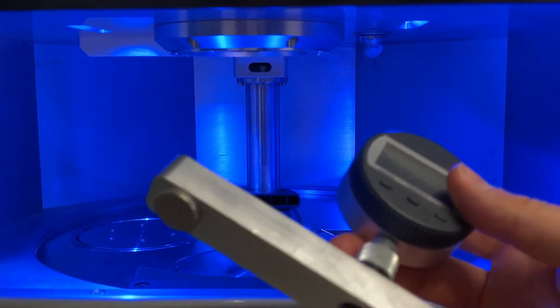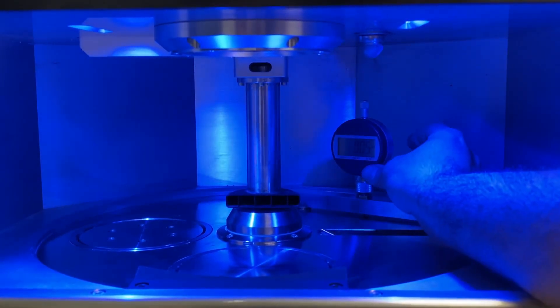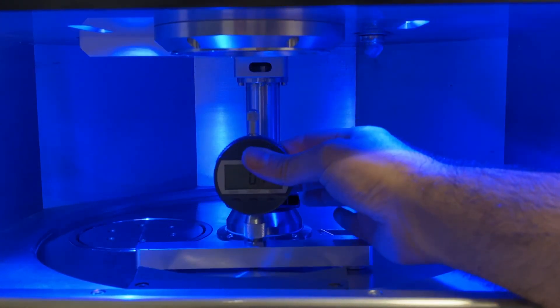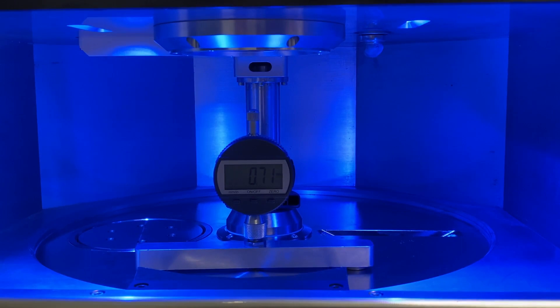First, you take the measuring gauge and put it in the back and put it to zero. Then, you get it to the front, put it on the base plate and move it until you are around 0.5mm above.